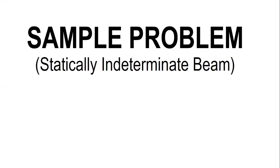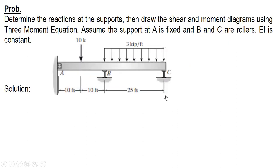The problem I'm going to show you is already solved using three different methods, and this time I'm going to use the fourth method. Here's the problem: determine the reactions at the supports and then draw the shear and moment diagrams using the three-moment equation. Now, in my video using the double integration method, the shear and moment diagram was shown for the same problem. Again, let's assume A is fixed and B and C are rollers, and EI is constant.